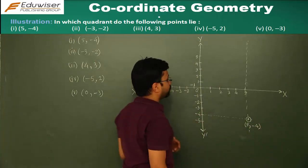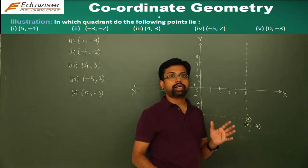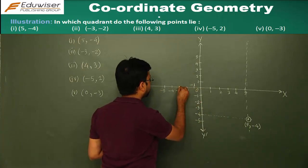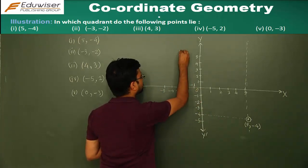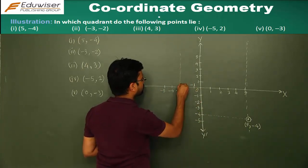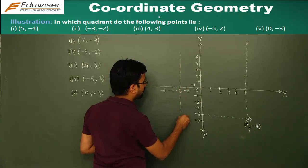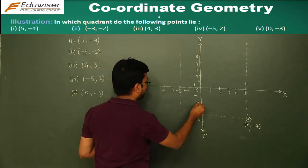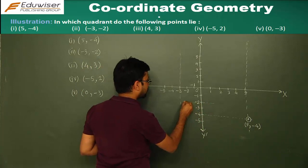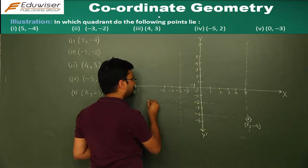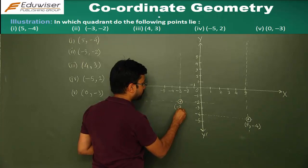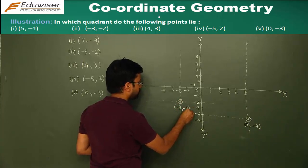Similarly, for the second point which is (minus 3, minus 2): at x equals minus 3, you draw a line parallel to the y-axis. Minus 2 is the y-value, so you draw a line parallel to the x-axis, and the point of intersection gives you (minus 3, minus 2).